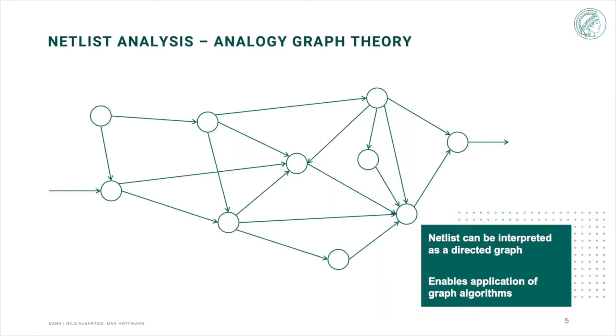Luckily, a netlist can be interpreted as a directed graph, where all gates are nodes and the signals and wires are the edges. This enables the usage of graph algorithms, which makes life for the reverse engineer usually a little bit easier.